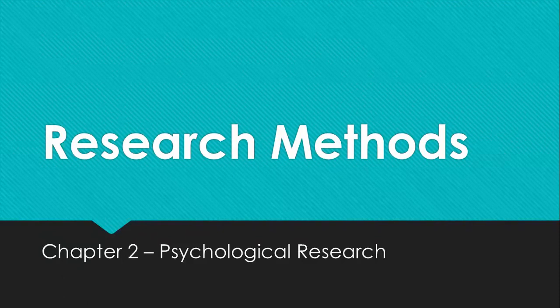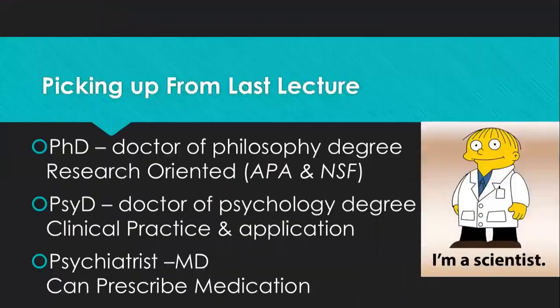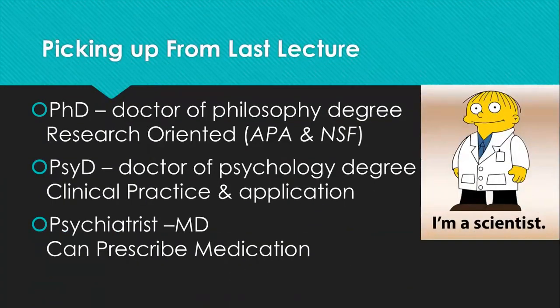Before we begin, there is a video right below this from a colleague of mine, Dr. Ian Duncan — most of you know him as John Oliver. He's going to explain a bit about research methods, then please resume this video. Now, picking up from last lecture, we talked about PhD and Psy-D — a doctor of philosophy and doctor of psychology, respectively. Those pursuing a PhD typically do research-oriented work for the APA or the National Science Foundation, or research and lecture at a university. Those receiving a Psy-D do more application and clinical practice.